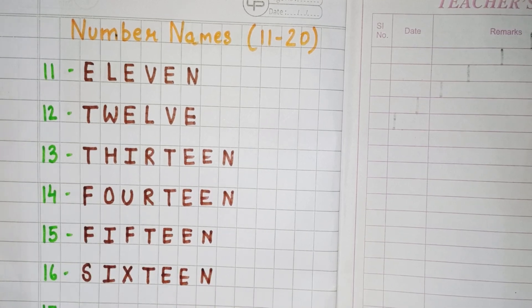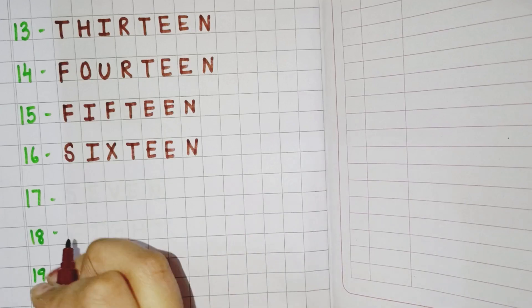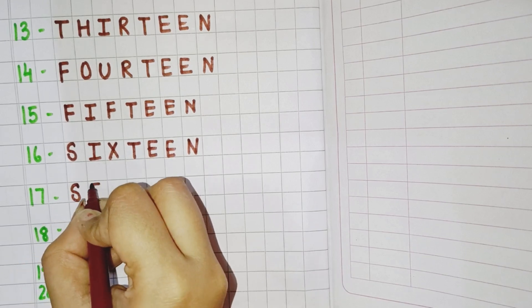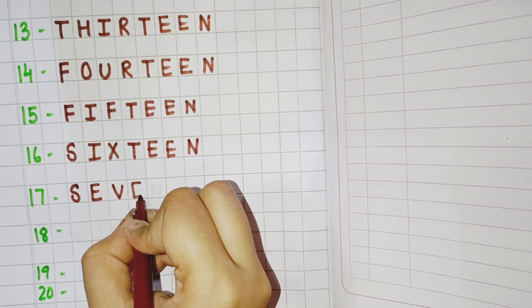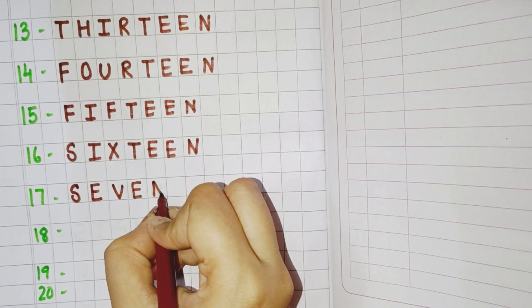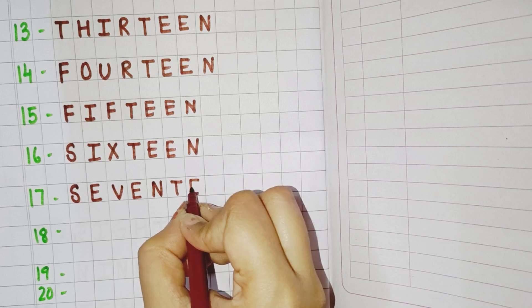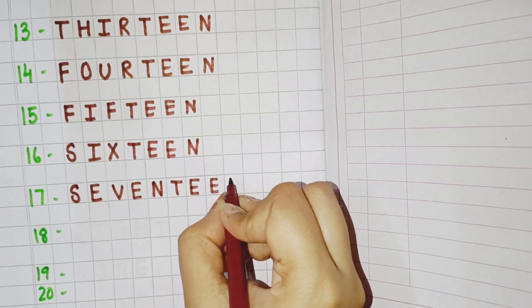Now next number is 17. So you will write S, E, V, E, N, T, double E, N. Seventeen.